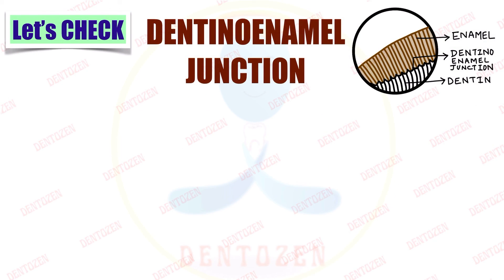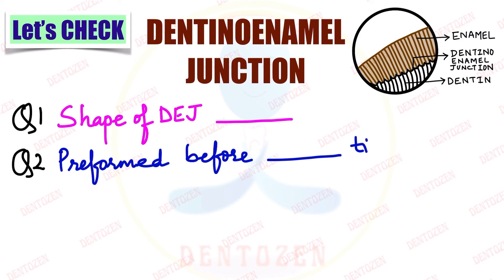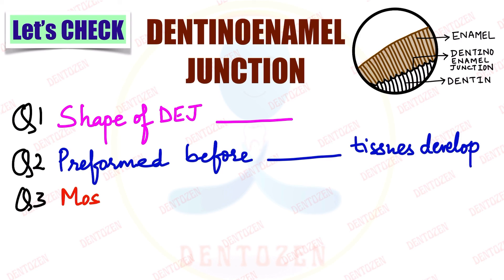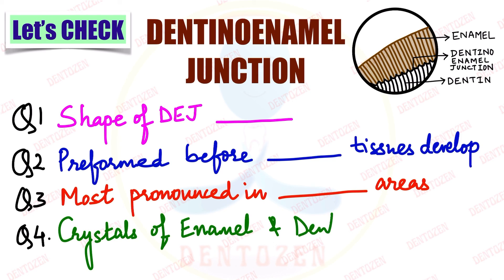Now let's check what you have learned. First: what is the shape of the dentino-enamel junction? Second: the junction is pre-formed before which tissues, and is most pronounced in which areas of the tooth? Third: crystals of enamel and dentine do what at this junction — what happens to the crystals at the dentino-enamel junction?